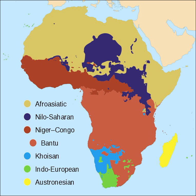Khoisan languages are concentrated in the Kalahari Desert of Namibia and Botswana. Niger-Congo languages cover West, Central, Southeast and Southern Africa.